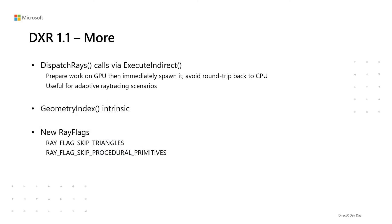There are a few more functions added to DXR 1.1. DispatchRays via ExecuteIndirect enables shaders on the GPU to generate a list of DispatchRays calls, including their individual parameters, which can then execute without an intervening round-trip back to the CPU. This helps with adaptive ray tracing scenarios like shader-based culling, sorting, classification, and refinement. The geometry index intrinsic is a convenience to allow shaders to distinguish geometries within bottom-level acceleration structures. DXR 1.1 also adds new ray flags, where implementations can make pipeline optimizations knowing that one primitive type can be skipped entirely.